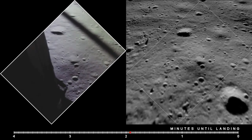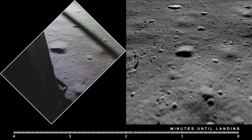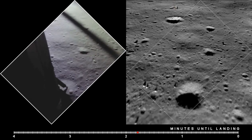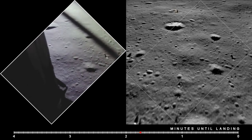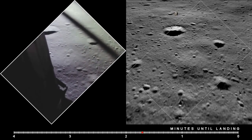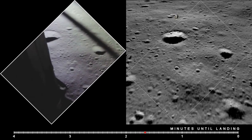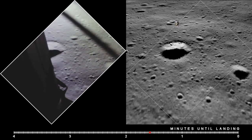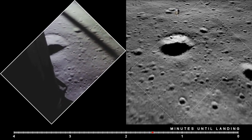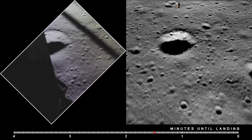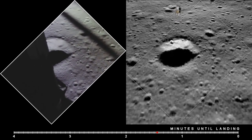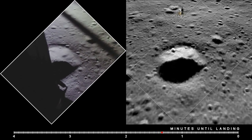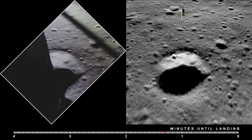200 feet, down 3 and a half, 47 forward. Hold up. On 1 and a half down. 70. That's a shadow out there. 50, down at 2 and a half, 19 forward. Altitude, velocity, light. 10 and a half down. 220 feet. 15 forward. 11 forward. Coming down nicely.